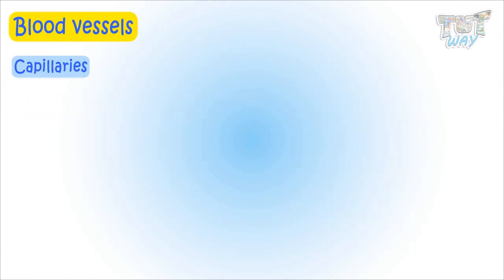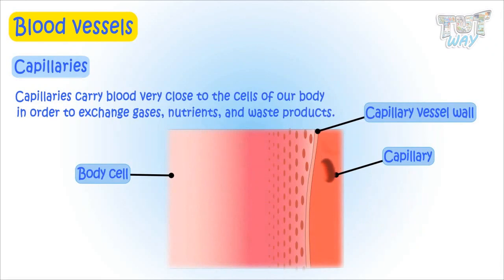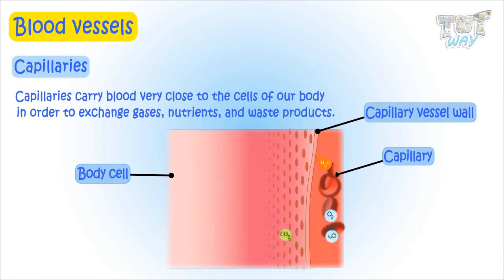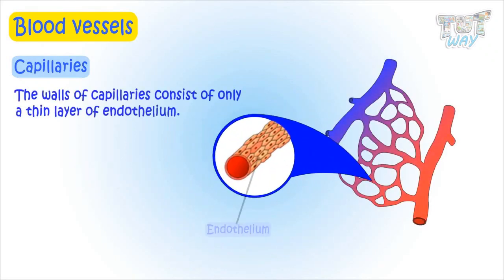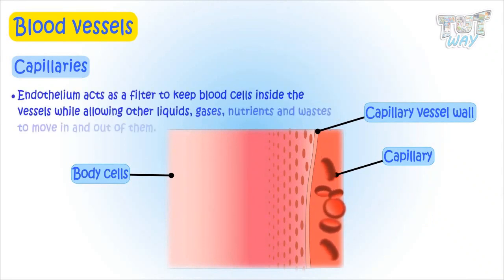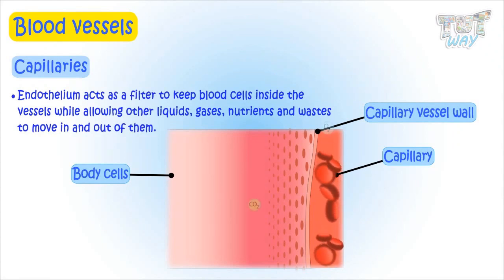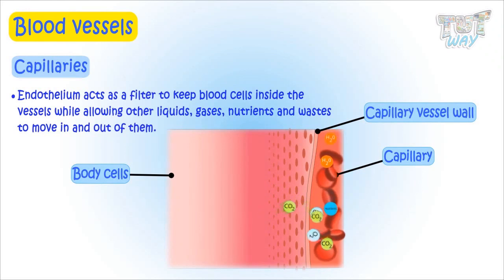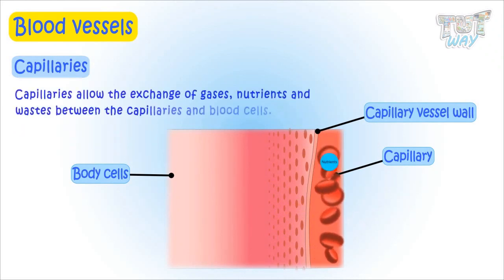Capillaries carry blood very close to the cells of the tissues of the body in order to exchange gases, nutrients, and waste products. The walls of the capillaries consist of only a thin layer of endothelium, so that there is a minimum amount of structure possible between the blood and the cells. This endothelium acts as a filter to keep the blood cells inside the vessels while allowing other things like nutrients, gases, and waste to move in and out. Nutrients from the blood can move to the cells, and waste from the cells can move to the capillaries.